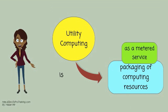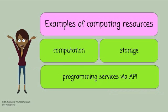Utility computing is the packaging of computing resources as a metered service. Examples of computing resources are computation, storage, and programming services via APIs.